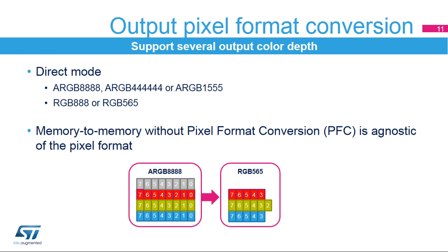The output pixel format converter generates the color for the destination independently from the source. There is no indirect mode in output, as this would imply calculating a color lookup table or CLUT. Nevertheless, memory-to-memory operations without pixel format conversion can copy data independently of their formats.